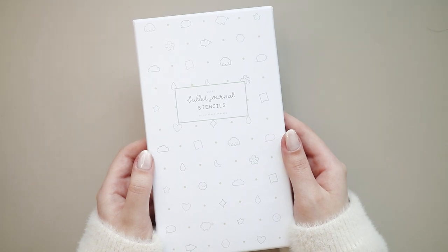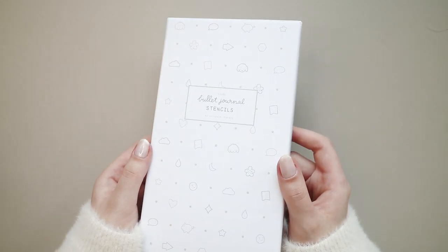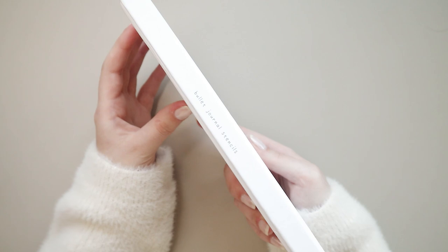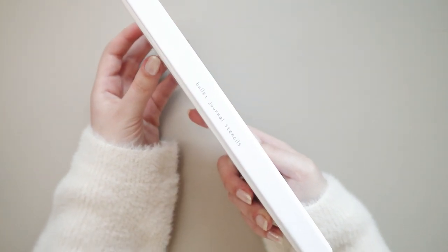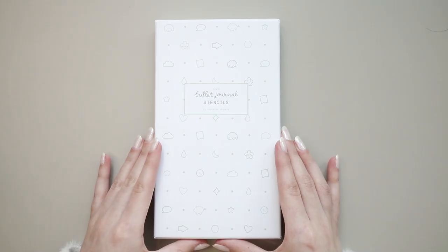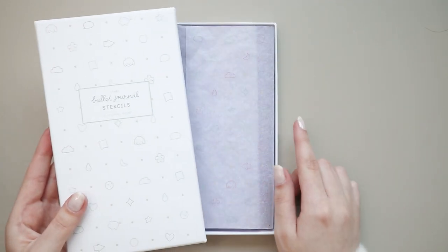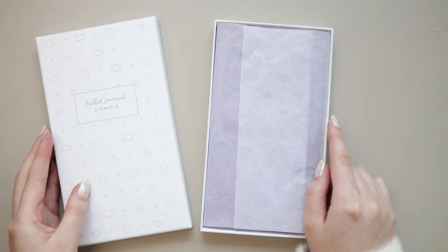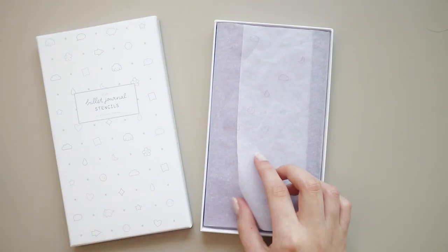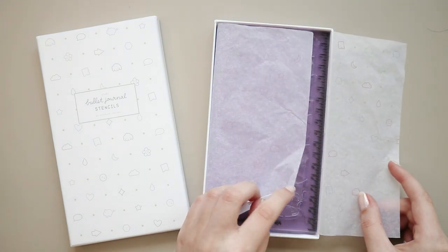The stencils come in this very slim eco-friendly box. Their boxes are really great and I normally use them to store other stationeries because they are of really good quality. The stencils come wrapped in this adorable recyclable tissue paper that has the same designs as the box.